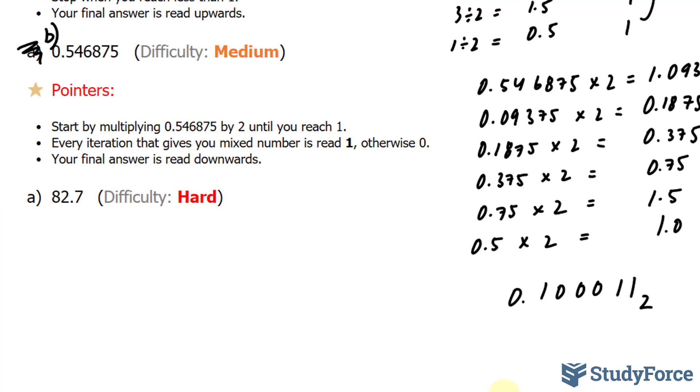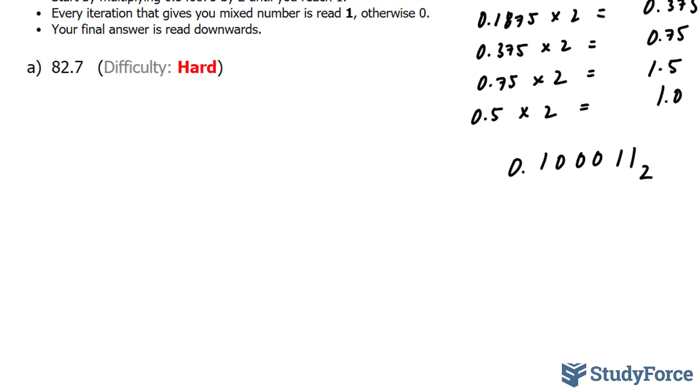We have to convert 82.7 into binary. Now, this is considered hard because it requires a lot of work. Let's start with the whole part. 82 divided by 2 gives us 41. 41 has no remainders. That's read as 0. 41 divided by 2, that's 20.5. There is a remainder, so it's 1. 20 divided by 2 is 10. No remainder, so that's a 0. 10 divided by 2 is 5. No remainder, another 0.